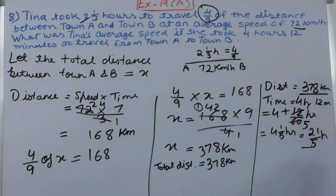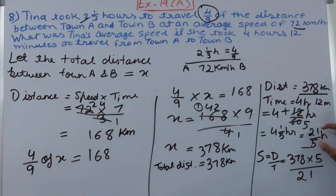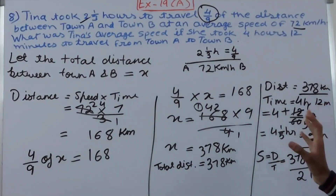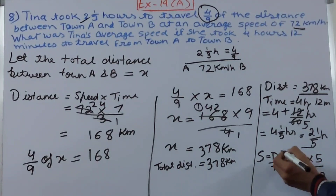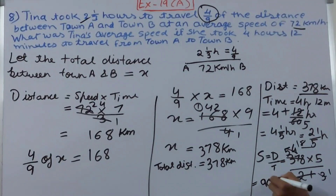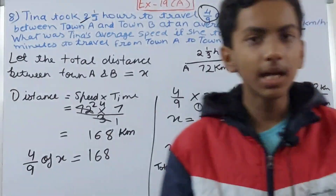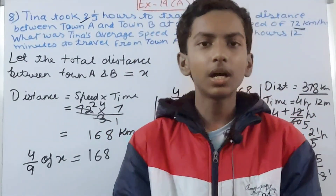Now calculate speed = distance ÷ time = 378 ÷ (21/5) = 378 × 5/21. Cancel: 378 ÷ 21 = 18, then 18 × 5 = 90. So the speed is 90 kilometers per hour. This is the final answer — the average speed Tina takes to travel from Town A to Town B if she takes 4 hours and 12 minutes. If you are new to my channel, subscribe and leave a like. Take care, bye bye!